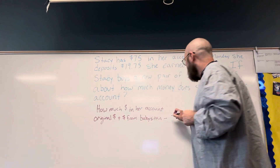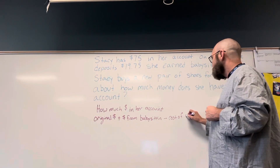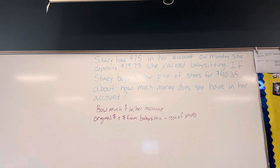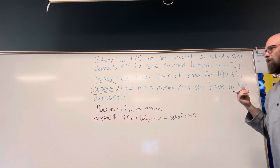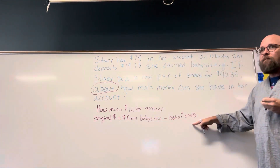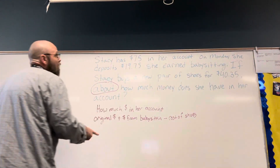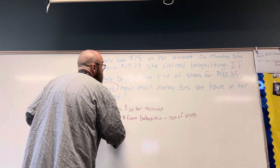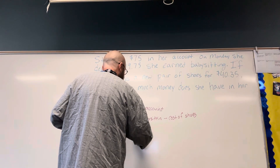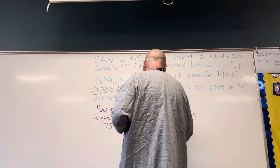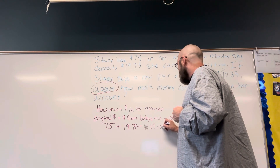And then subtract the cost of shoes. Does everybody agree with that? Okay. I would add one thing to that, because it says 'about' — I want to make these numbers friendly. So using my statement of how I'm supposed to do it, I'm going to write an equation. I'll use the original numbers first: 75, plus $19.75, minus $40.35, and that's going to equal what's in her account — so that would equal A.